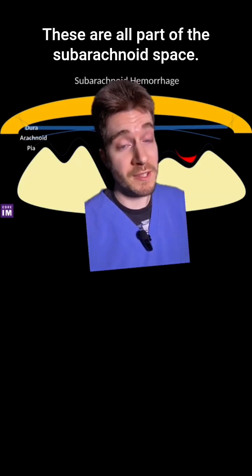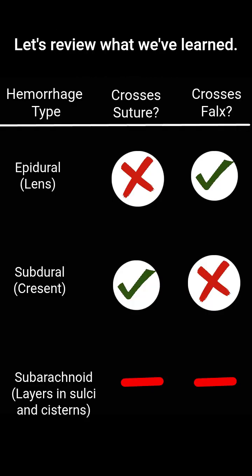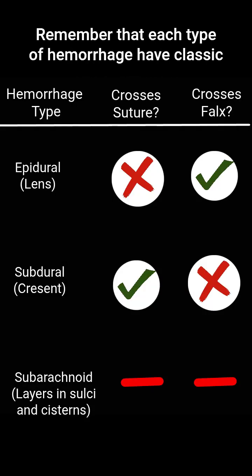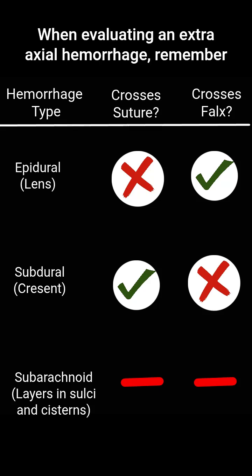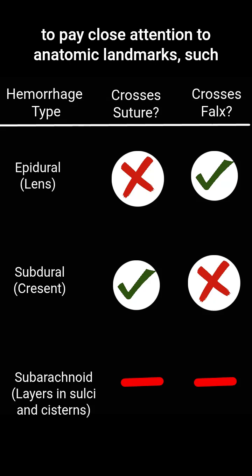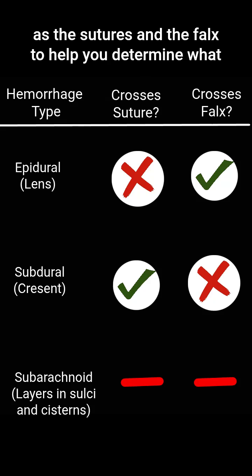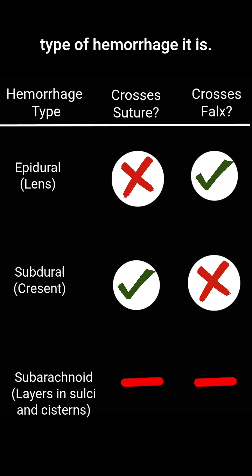These are all part of the subarachnoid space. Let's review what we've learned. Remember that each type of hemorrhage has classic shapes, which are defined by the spaces they occupy. When evaluating an extra-axial hemorrhage, remember to pay close attention to anatomic landmarks such as the sutures and the falx to help you determine what type of hemorrhage it is.